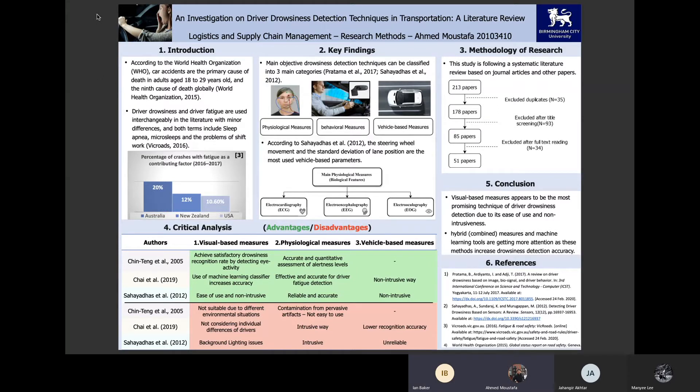Okay, can I ask you what were the key findings from your research? Yeah, the key findings are basically three sets of techniques for detecting driver drowsiness, which are the physiological measures, behaviour measures, and vehicle-based measures. So those are the three main ways that scientists and car manufacturers are using for detecting driver drowsiness.